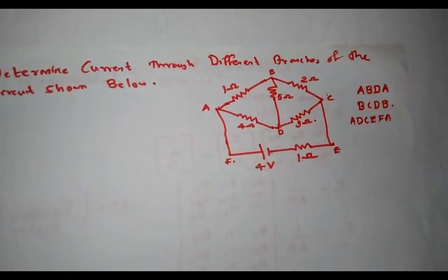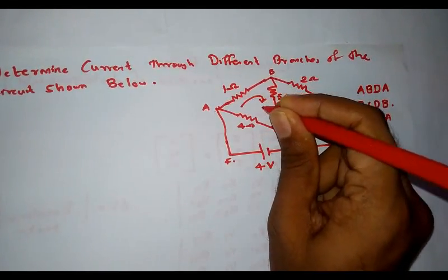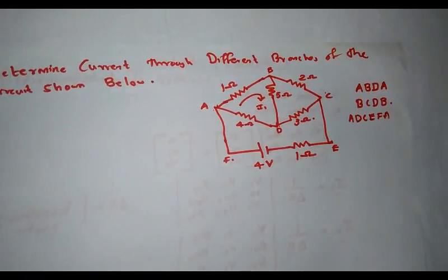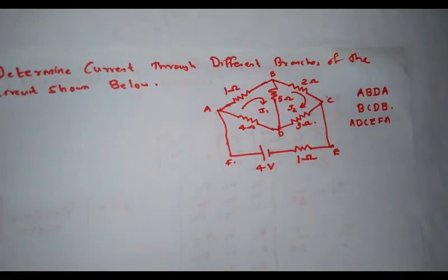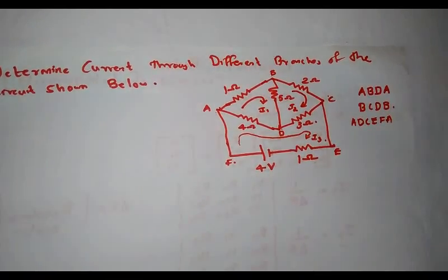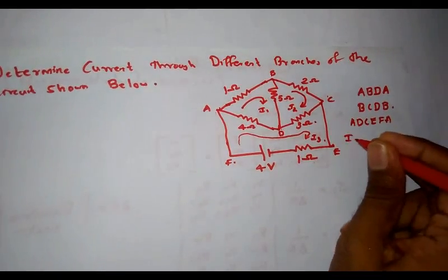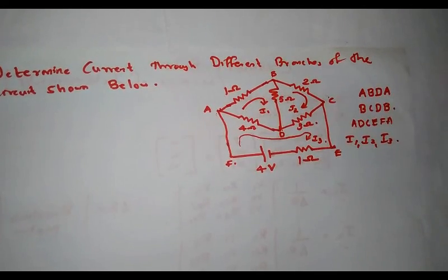Next I have to assign mesh currents to these three closed loops. I am considering current I1 flowing through the first mesh, current I2 flowing through the second mesh in a clockwise direction, and current I3 flowing through the third mesh in a clockwise direction. So my mesh currents are I1, I2, and I3.